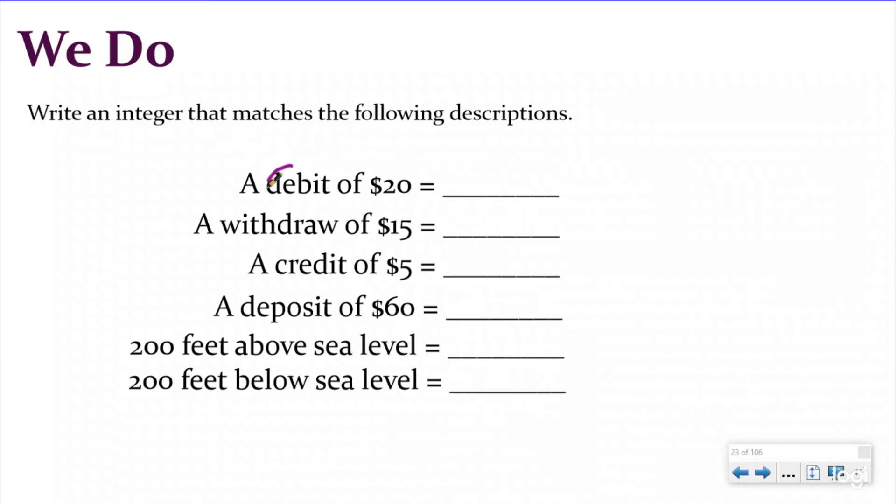And so if we want to write an integer that matches the following descriptions, if I have a debit of 20, I know that's going to be taking away money from my bank account. So that's going to be a negative 20. If I have a withdrawal of 15, again, I'm taking money away. So I'm going to be below zero and I have a negative 15.